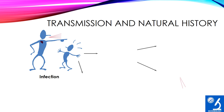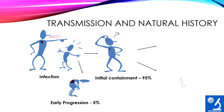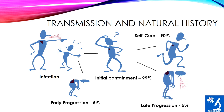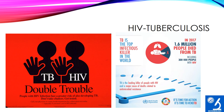Regarding transmission and disease progression: among all people infected, 5% progress early while 95% achieve initial containment. Of that 95%, only 5% lead to late progression while 90% are self-cured with immunity. Regarding HIV-associated TB: TB is one of the most common opportunistic diseases among HIV-infected persons due to low cell-mediated immunity. Worldwide, TB occurs in 70 to 80% of all HIV-infected individuals, and extra-pulmonary TB is more common than pulmonary TB in such patients. In 2017, 1.6 million people died because of TB, including 3 lakh people with HIV.